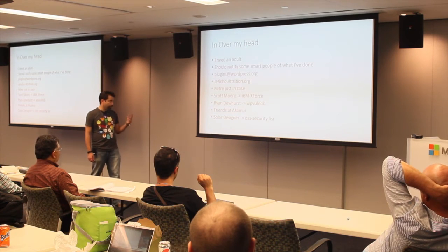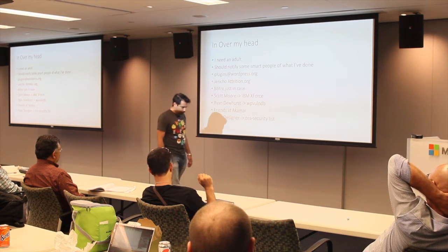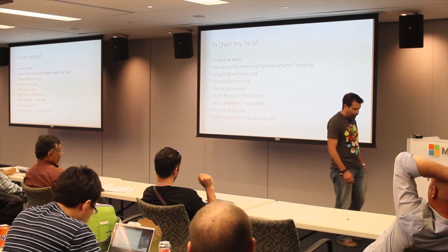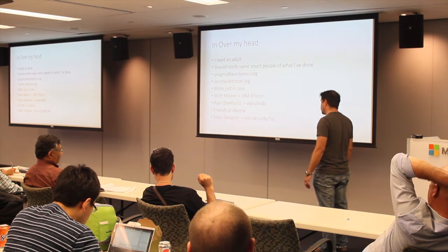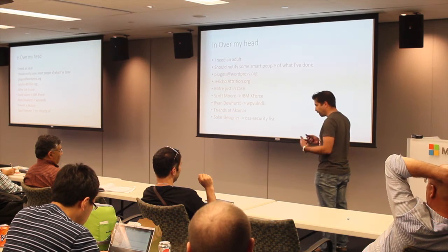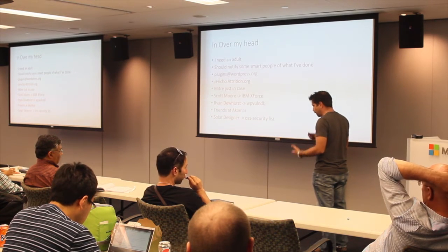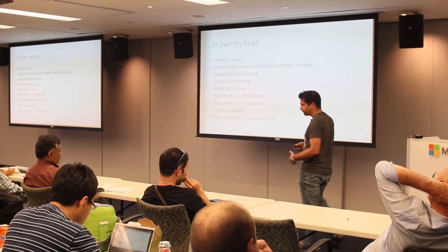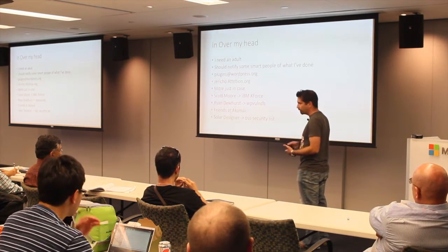The first group I notified was WordPress. They were flabbergasted — they were like: we can't believe you have a database of 1,352 cross-site scripting vulnerabilities, what are we going to do? We can only address one of these at a time and it takes us days to verify, create a proof of concept, and notify the author. If the author doesn't fix the plugin, they pull it down. They had this very slow manual cycle.